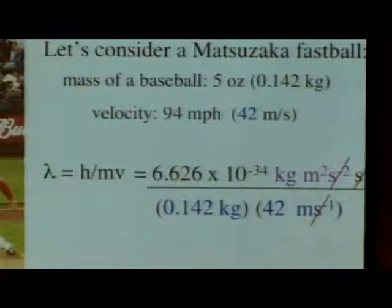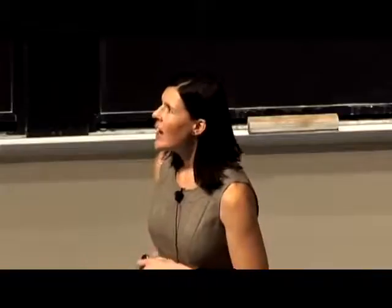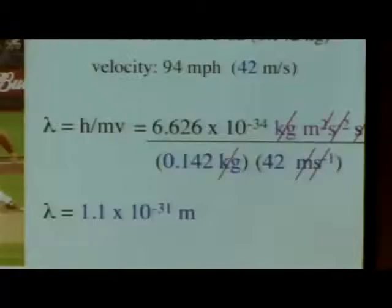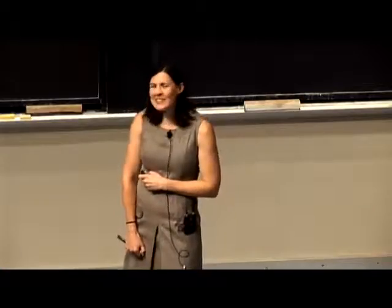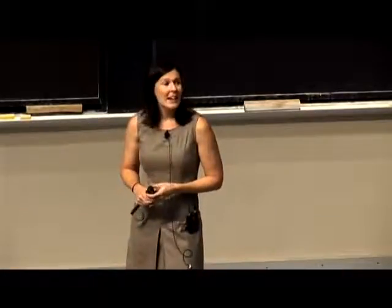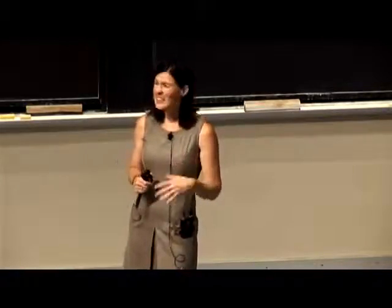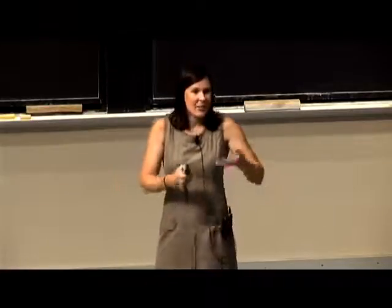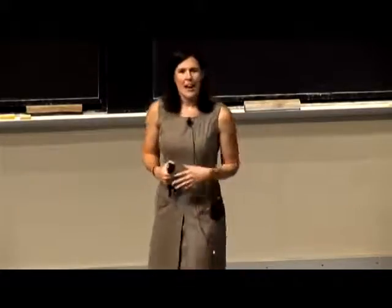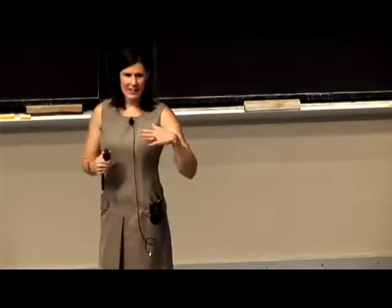So we can cross out our units doing unit analysis: the seconds cross out, the kilograms cross out, and one of the meters crosses out from the top. We're left with an answer in meters, which is good when looking for a wavelength. What we find is that the wavelength of a Matsuzaka fastball is 1.1 times 10 to the negative 31 meters. This is really, undetectably small. What tends to be important is the size of the wavelength relative to its environment — 1.1 times 10⁻³¹ meters is not significant when compared to the length of a baseball or the size of a baseball field. That would be de Broglie's answer for why we're not observing wave-like behavior in day-to-day life.